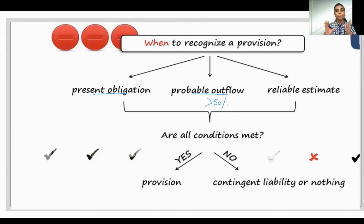So again, revising provision, you will recognize it if it is a present obligation, and if it is probable that there will be outflow of resources because of this present obligation, and there should also be a reliable estimate to understand that there will be an outflow of resources. So if all the three conditions are satisfied, then you will show it as a provision.